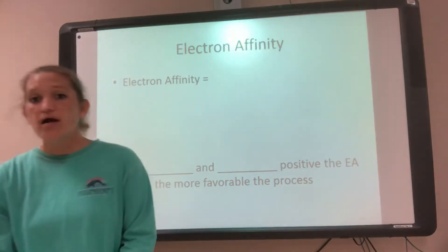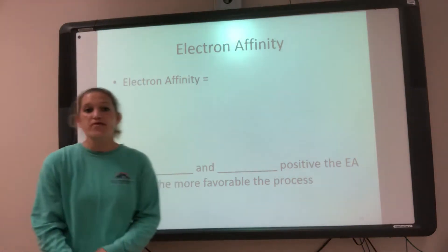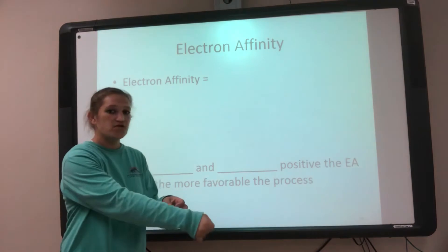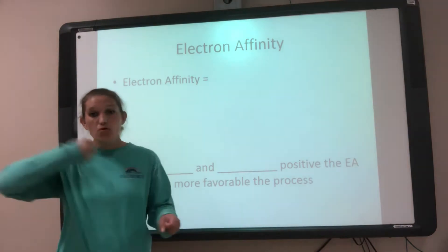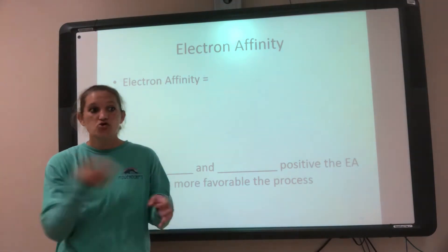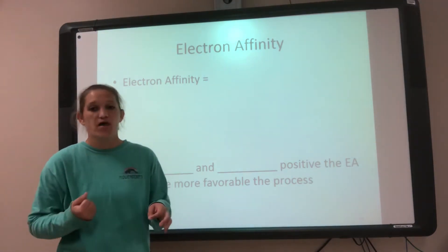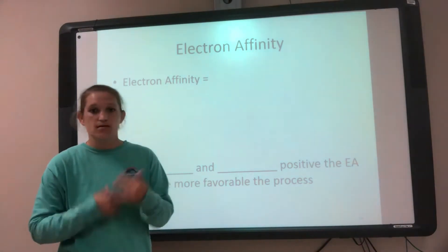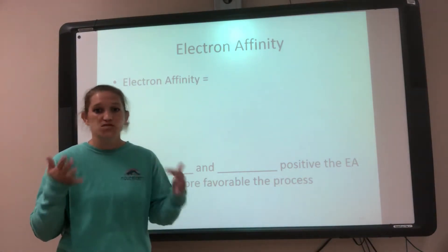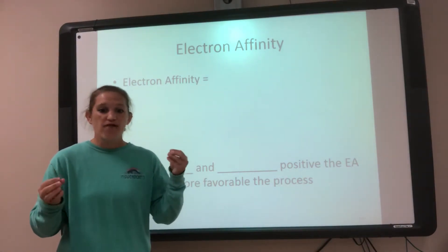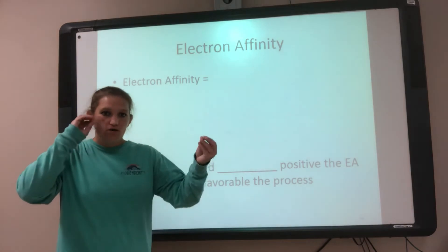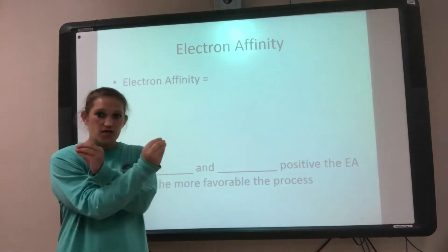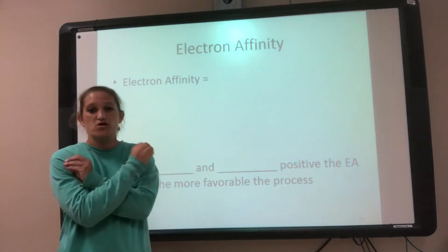So now we're kind of talking about the opposite. Ionization energy was the amount of energy to remove an electron, so it took effort. Electron affinity is almost the complete opposite, and a lot of people get these two confused because you have to think ionization energy and then kind of flip your thinking for electron affinity.